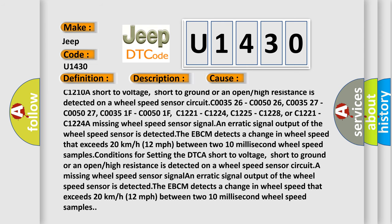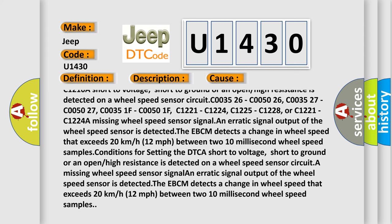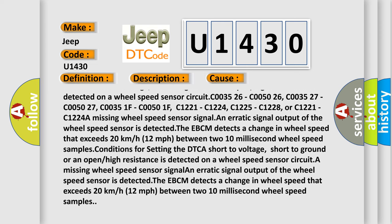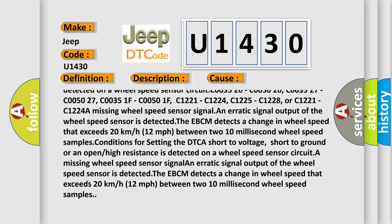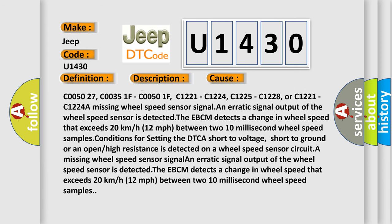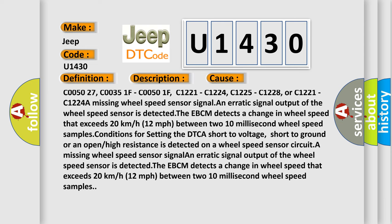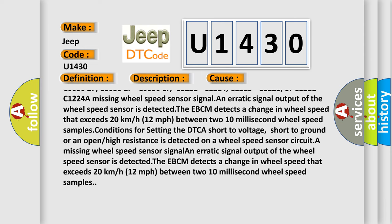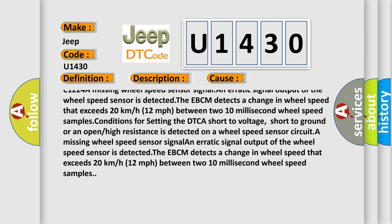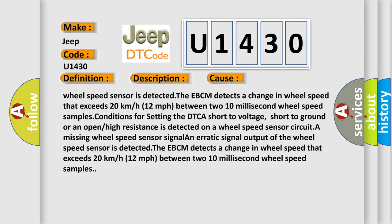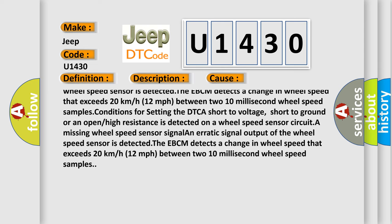In this case, you can see that C003526, C005026, C003527, C005027, C00351F, C00501F, C1221, C1224, C1225, C1228, or C1221, C1224. A missing wheel speed sensor signal and erratic signal output of the wheel speed sensor is detected.